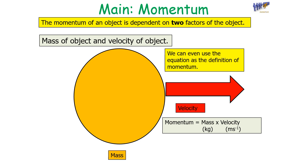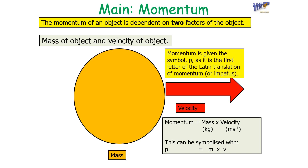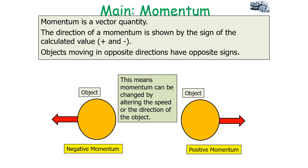We can use the equation of momentum to define it as the product of the mass of the object and its velocity. We write it in symbol form as p = mv. Momentum is given the symbol p because the first letter of the Latin translation 'momentum' or 'impetus' begins with the letter p. Momentum is a vector quantity and the direction of momentum is shown by the sign of the calculated value — either positive or negative.